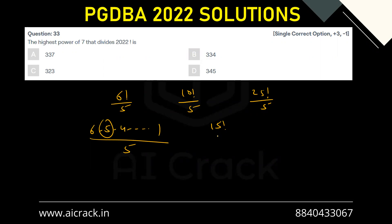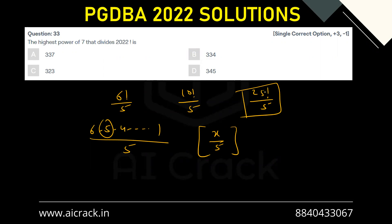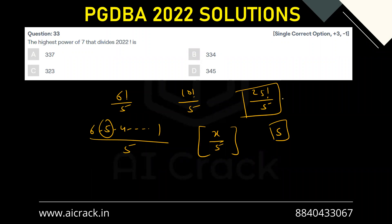For 15 factorial we get three powers of 5. So if we try to generate a function for this, we write GIF(x/5) — the greatest integer function of x divided by 5 — for x factorial. That gives us the power of 5 from single multiples of 5, but it only captures single powers.